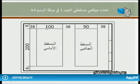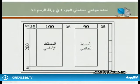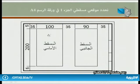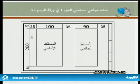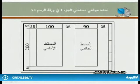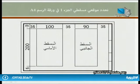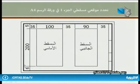بطرح 190 مليمتر من طول اللوحة 297 مليمتر وقسمة الناتج على ثلاثة فراغات نحصل على مسافة 35 مليمتر بين المسقطين وحواف ورقة الرسم. أما في الجهة الأخرى، فبطرح 200 مليمتر من عرض الورقة 210 مليمتر وقسمته على فراغين نحصل على 5 مليمتر من الأعلى و5 مليمتر من الأسفل.